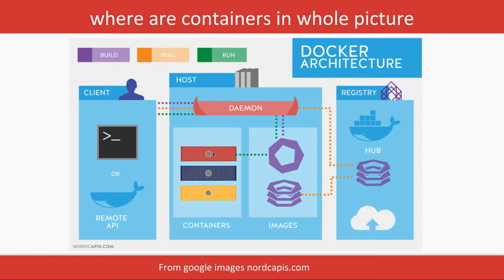In the diagram, green dots show the `docker run` flow: running the image creates a container. The purple dots represent `docker build`, which reads the Dockerfile on the client side and creates an image.